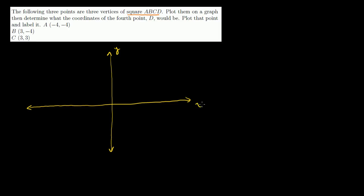Now let's do a slightly more involved problem. The following three points are three vertices of square ABCD. Plot them on a graph, then determine what the coordinates of the fourth point D would be. Let me draw the axes: the vertical y-axis and the horizontal x-axis, marking x equals 1, 2, 3, 4 and negative 1, negative 2, negative 3, negative 4, and similarly for y.